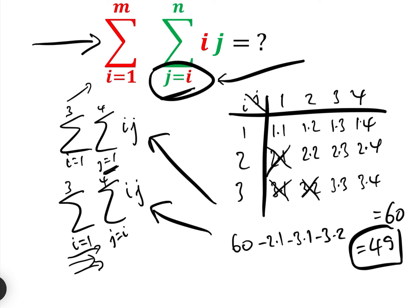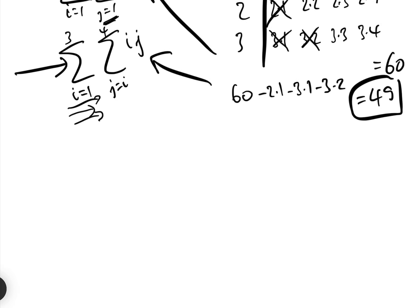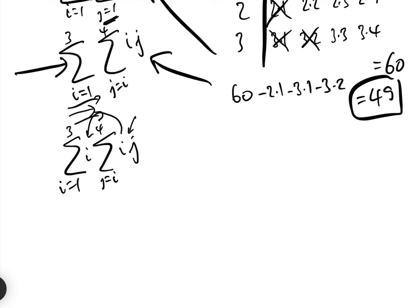What we want to do now is try to do this with algebra, and then we can work up to the general case. So the sum between i equals 1 and 3, and j equals i to 4, of i times j — how are we going to do that? Well, as we discussed in the previous video, because we're multiplying, we can move the i outside the inner summation, because the second summation is only summing over j.